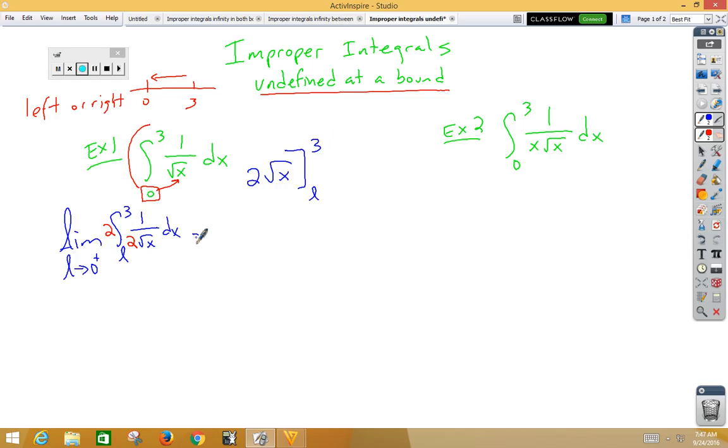So now let's rewrite that as the limit. And as L approaches 0 from the right side, we have 2 root 3 minus 2 root L. Well, again, L is approaching 0 from the right side. The first thing we always try with a limit is to plug in. So if we were to plug in a 0 there, we would get 2 root 3, so this one converges.